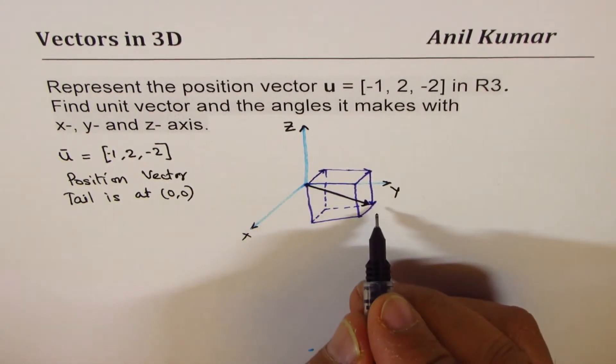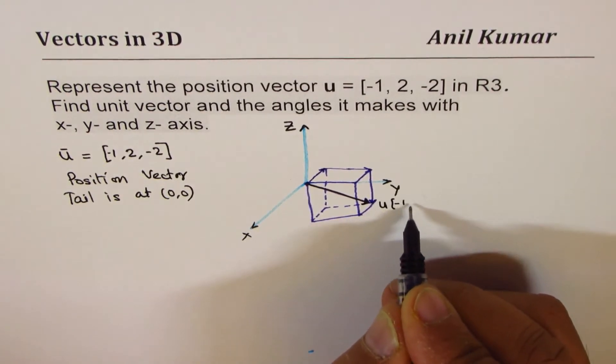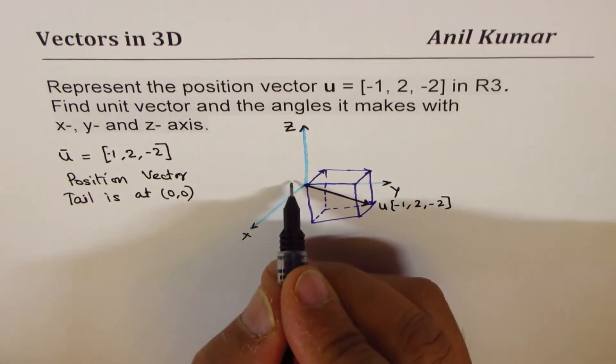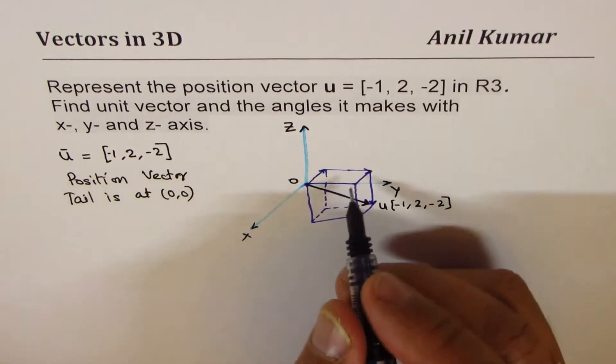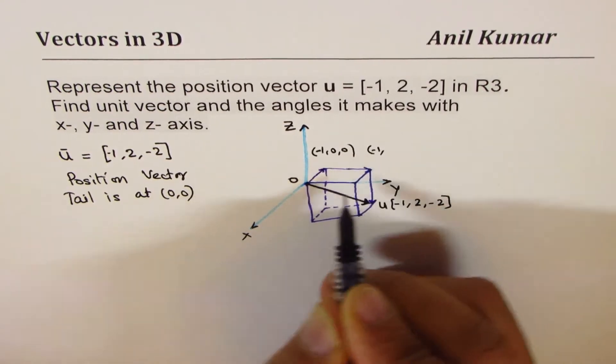So, this is the vector u, which is -1, 2, -2. Now, as an exercise, what you can do is you can label all other points. This will be (-1, 0, 0).